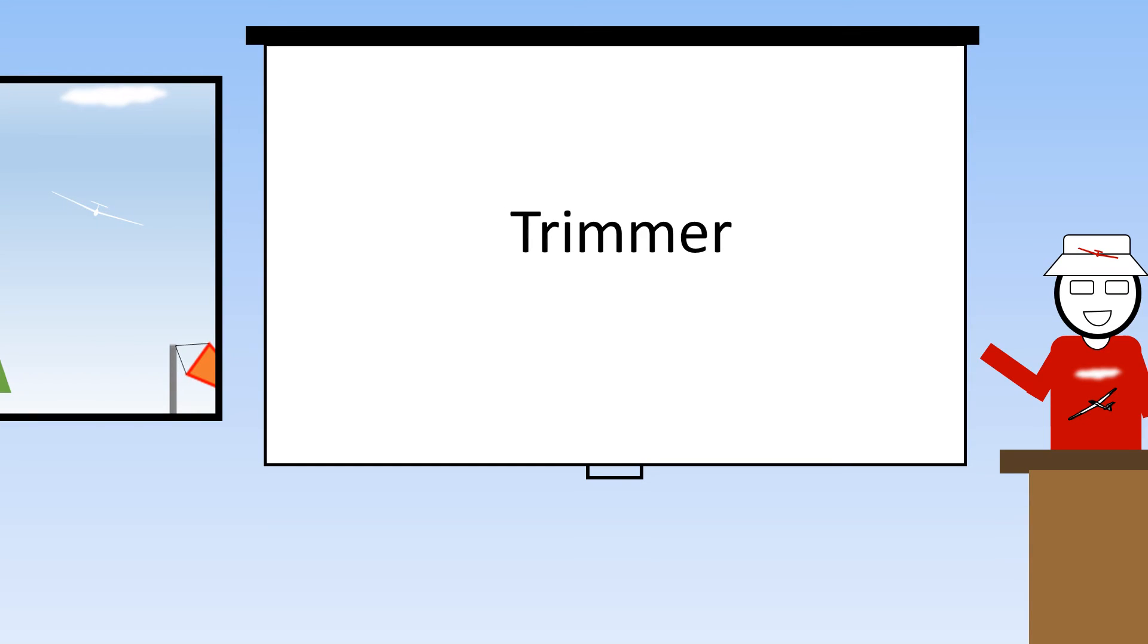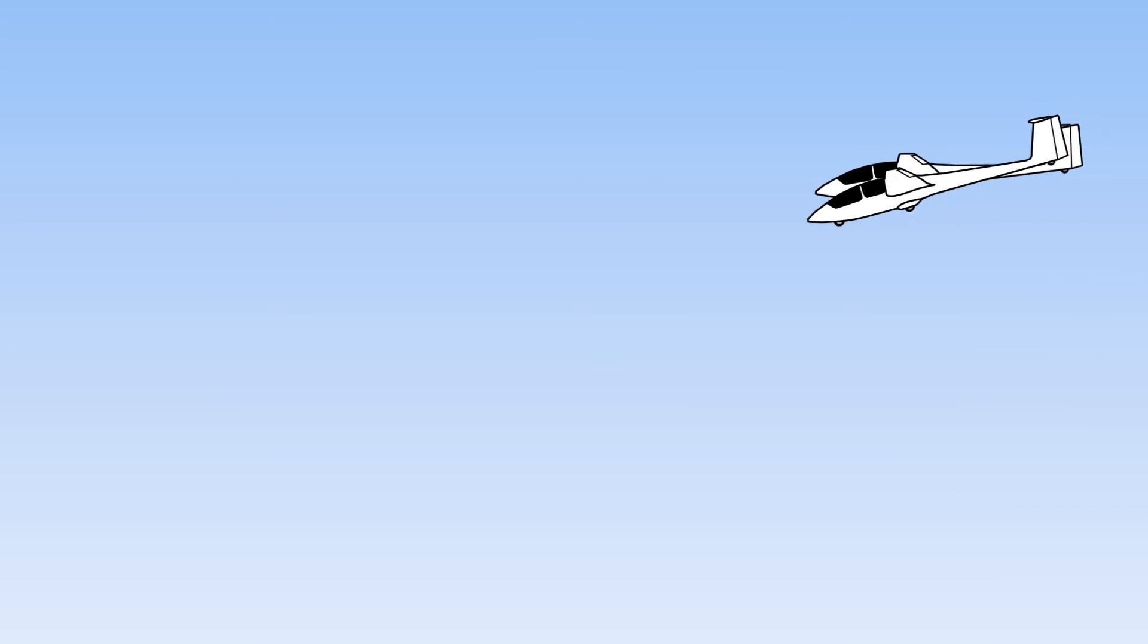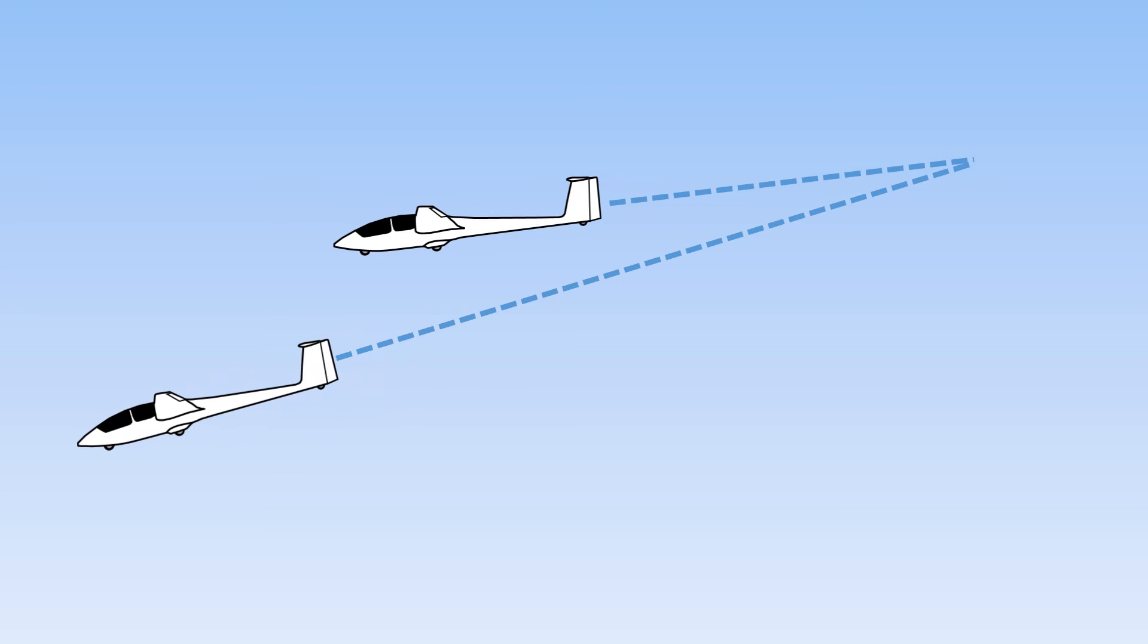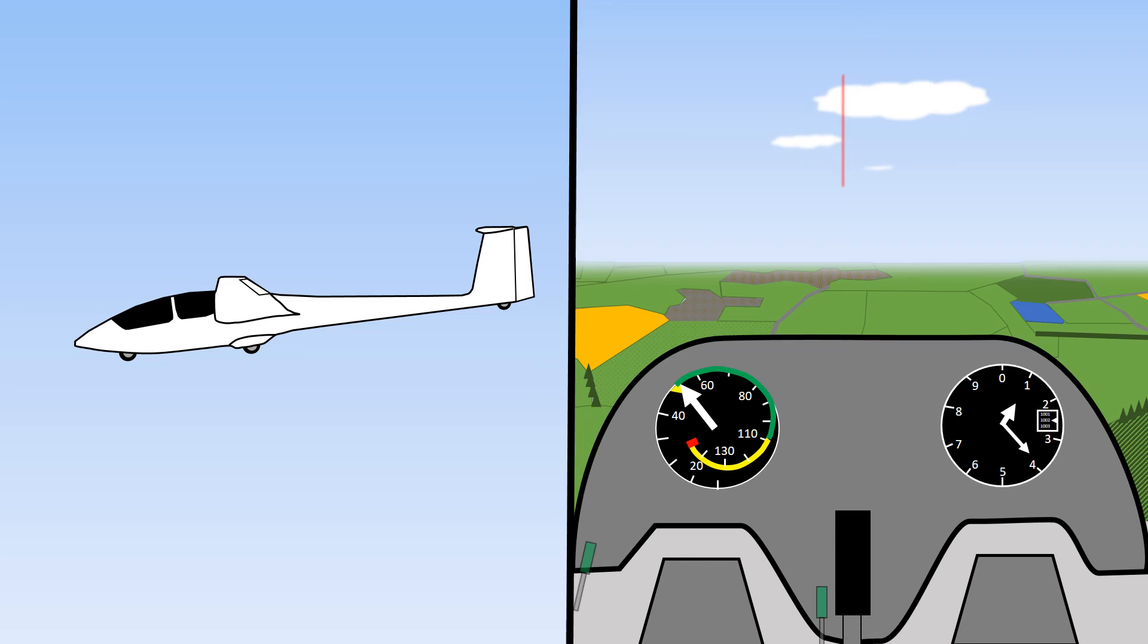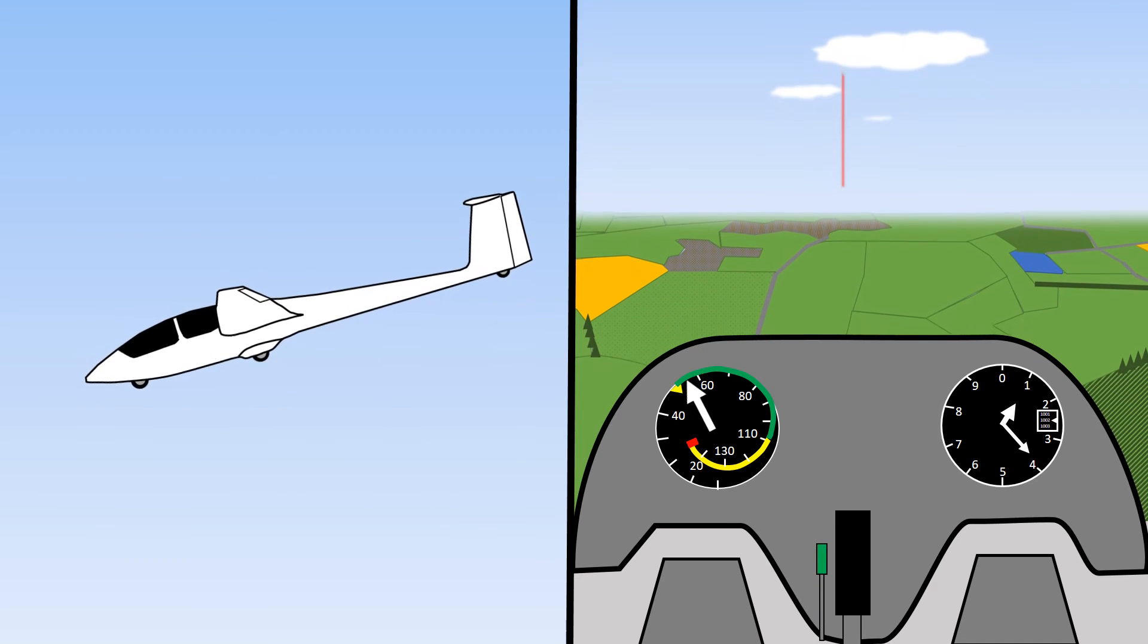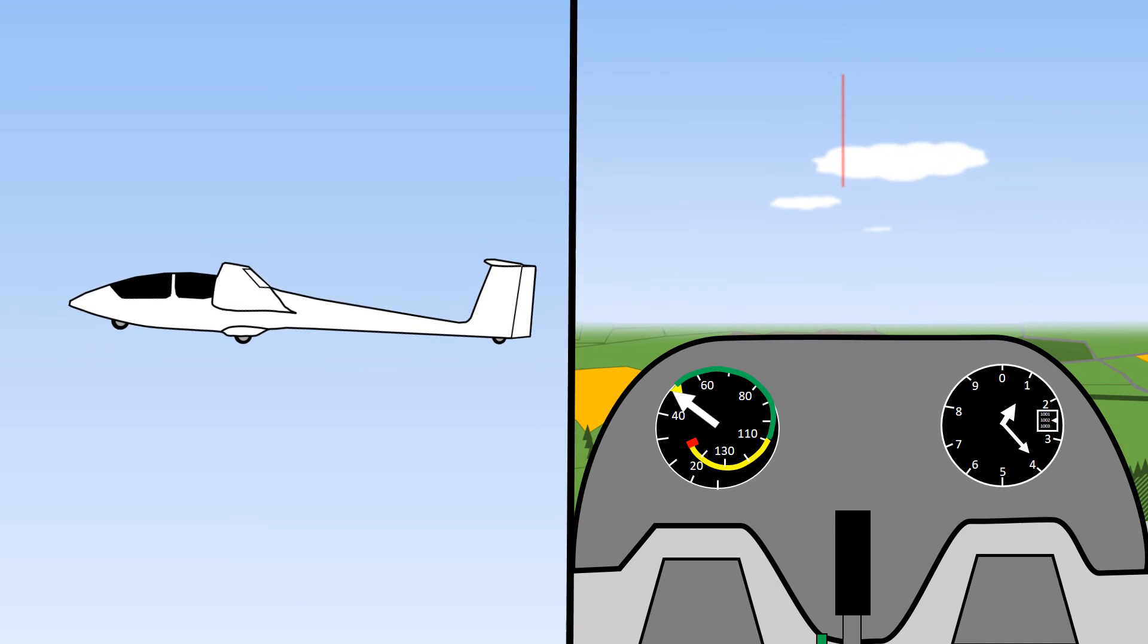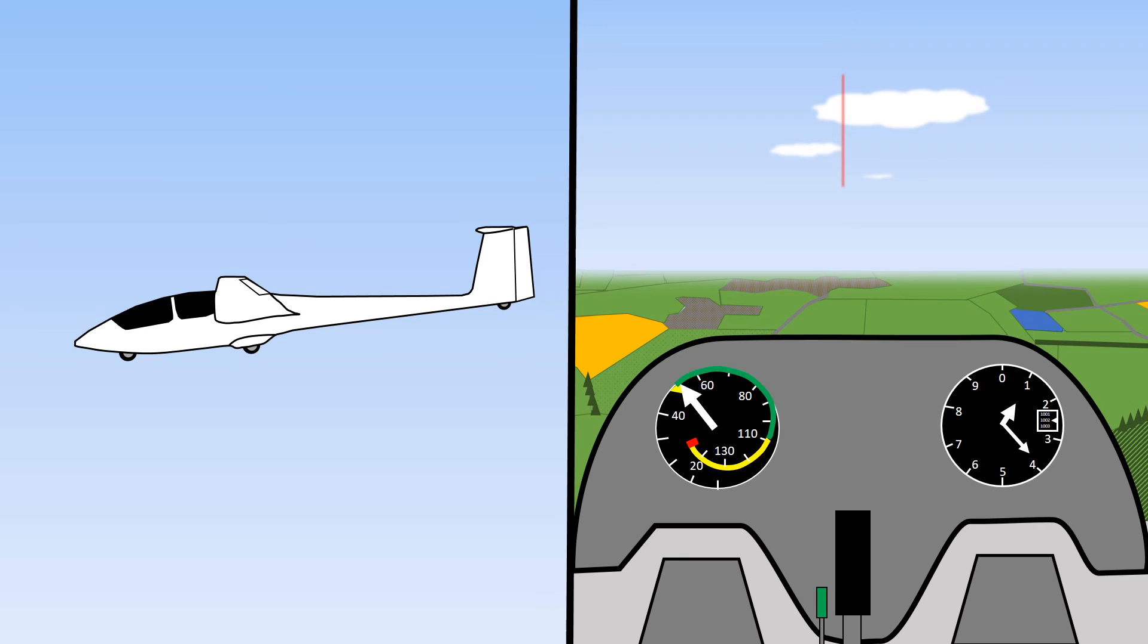You already know that you can change the airspeed of the glider by raising or lowering the nose. It might not surprise you that the trim changes the attitude and thus the speed that the glider will stabilize at. So it is a little like cruise control in a car. The trim is usually a green lever which is next to the stick or on the left side of the cockpit. Moving the trim forward sets a nose low attitude and a high airspeed. Moving the trim backwards sets a nose high attitude and a slow airspeed.